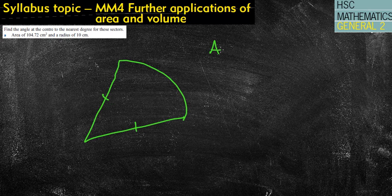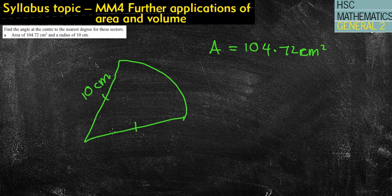We're told in this case that the area is 104.72 centimeters squared, and we're told that it has a radius of 10 centimeters. And what it's asking is for the angle at the center. So this is a slightly more challenging question.